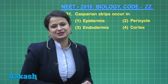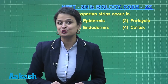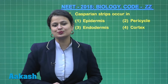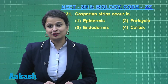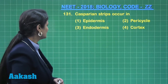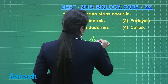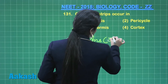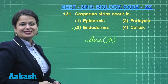Casparian strips are thickenings made up of suberin, a hydrophobic substance. These strips are present in the endodermis. So the right answer for question 131 is option number three.